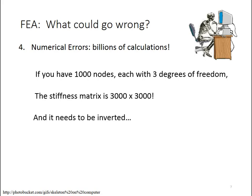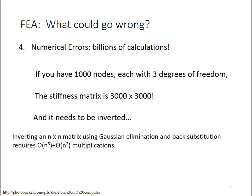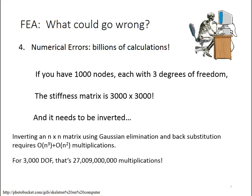That stiffness matrix has to be inverted, and when you invert a matrix, an n-by-n matrix, then you end up with on the order of n cubed and n squared multiplications. So what that means for our little 3,000 by 3,000 stiffness matrix is 27 billion multiplications have to happen in order to invert that matrix.